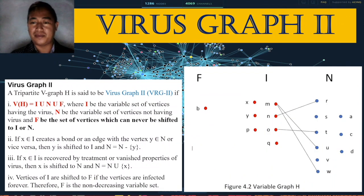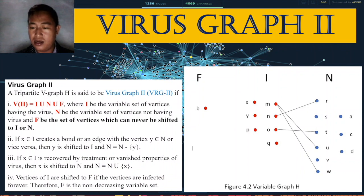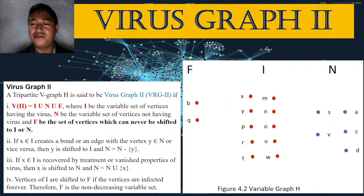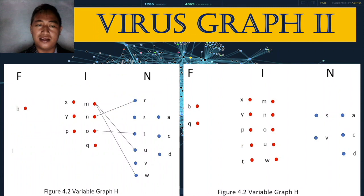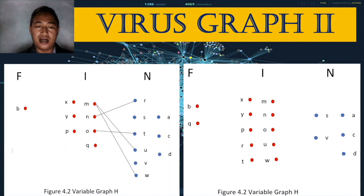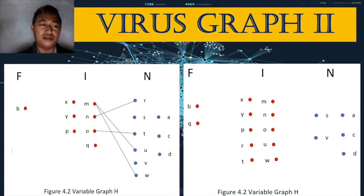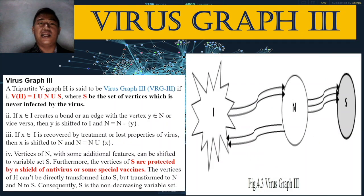In the virus graph two example, we can see m infected u and w, n infected r, and o infected t. What happens next: those four vertices — r, t, u, w — will be shifted to set I, and vertex q is shifted to set F. So r, t, u, w are transferred to set I, and q is shifted to set F.